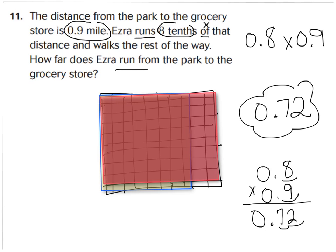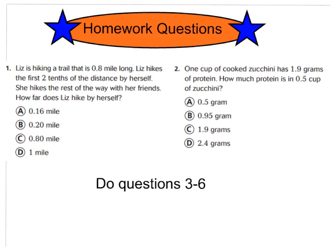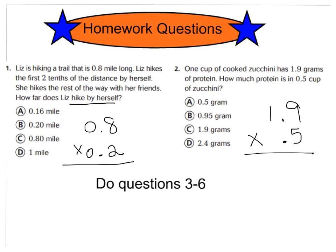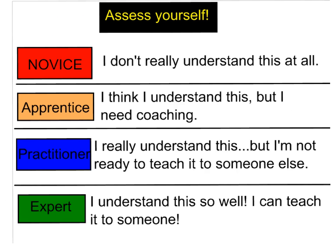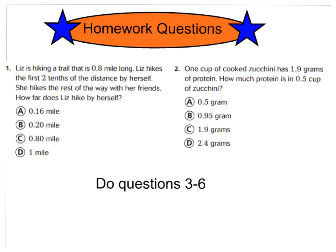Let's turn the page over for your homework. Question one: Liz is hiking a trail that is 8 tenths of a mile long. She hikes the first 2 tenths by herself and the rest with her friends. How far does she hike by herself? Remember, she hikes 2 tenths of the 8 tenths trail. Question two: one cup of cooked zucchini has 1 and 9 tenths grams of protein. How much protein is in 5 tenths — one half — of a cup of zucchini? You can draw models or use the traditional method. Also do questions 3 through 6 for review, and assess yourself as level 1, 2, 3, or 4 at the top. In class tomorrow we'll practice more with models. Good luck on your questions, and have a great night. Bye-bye.